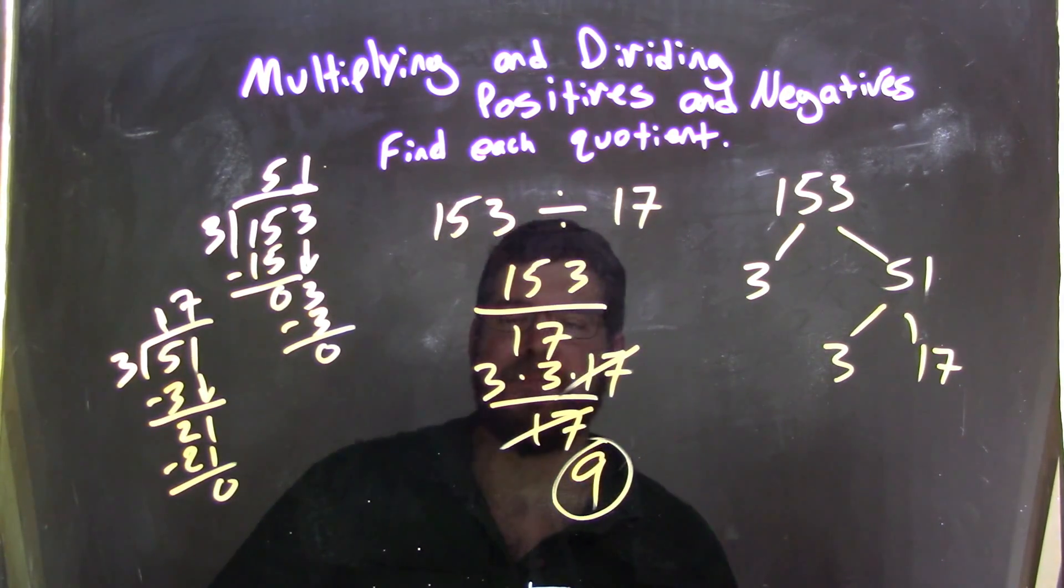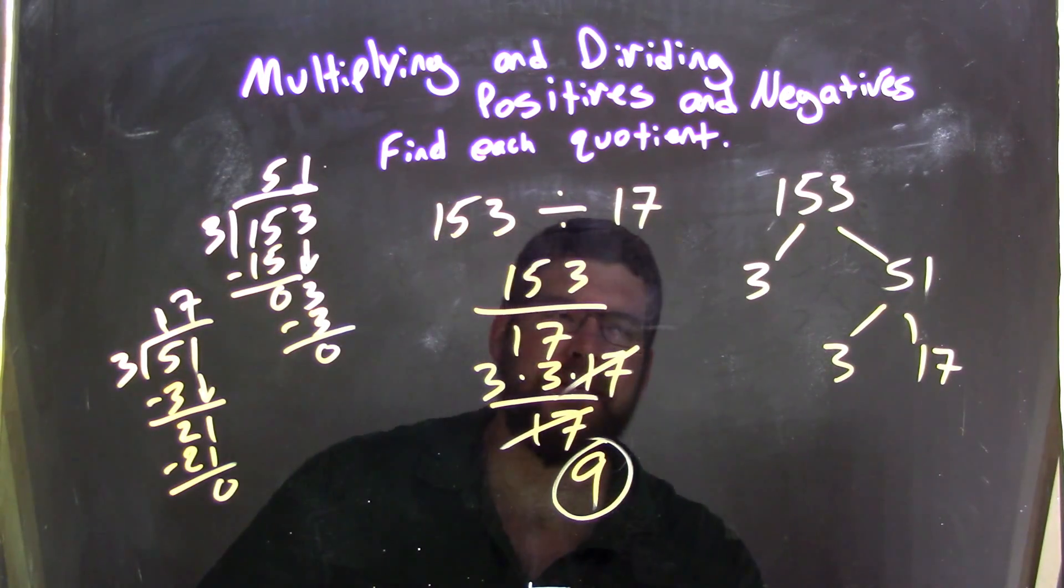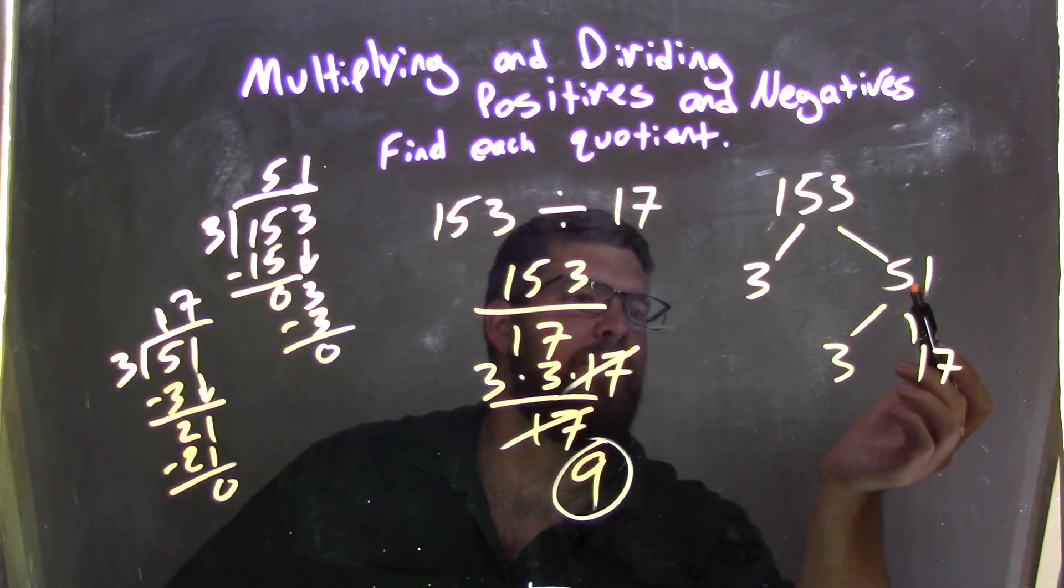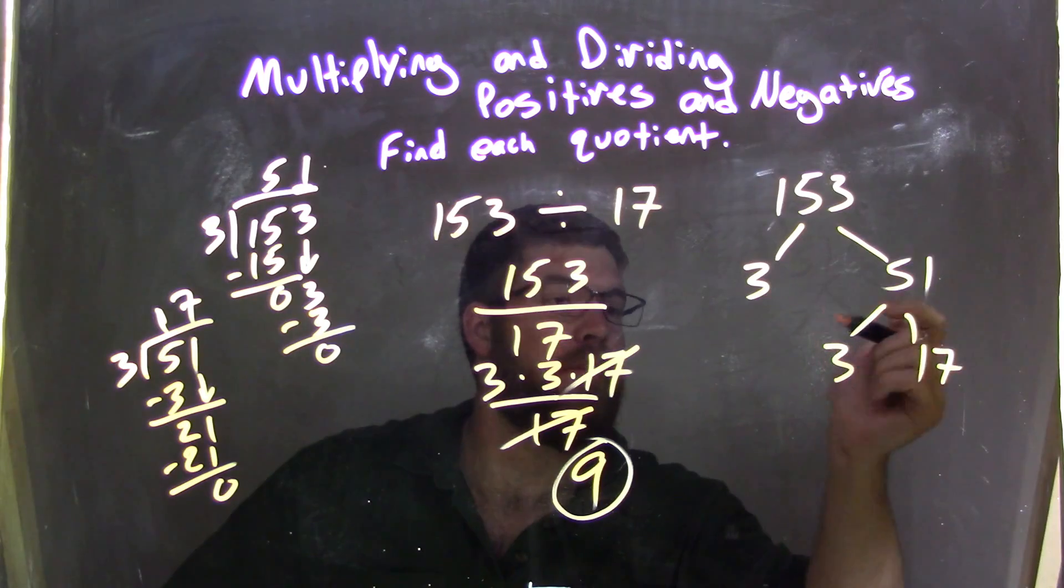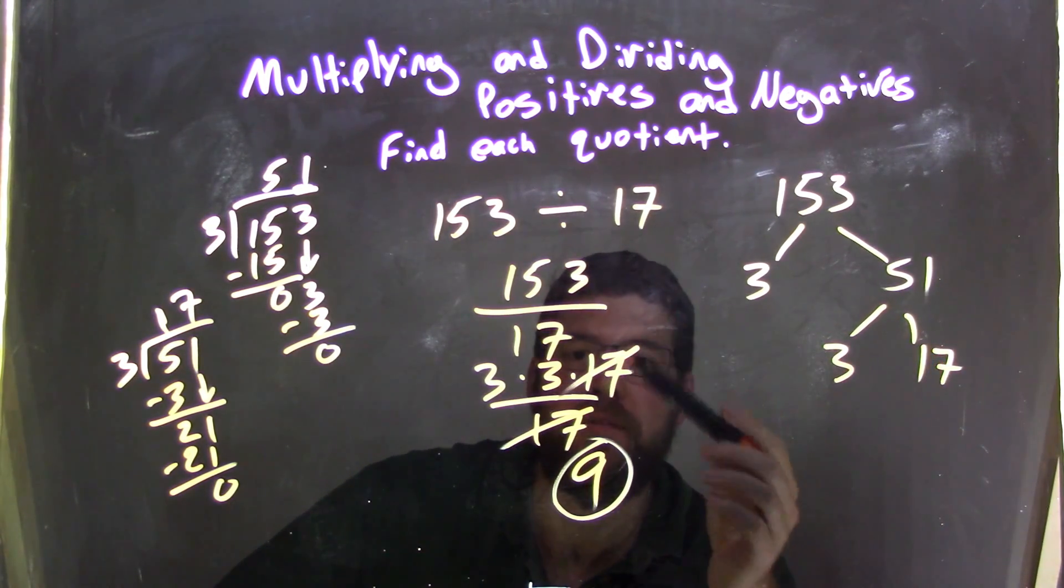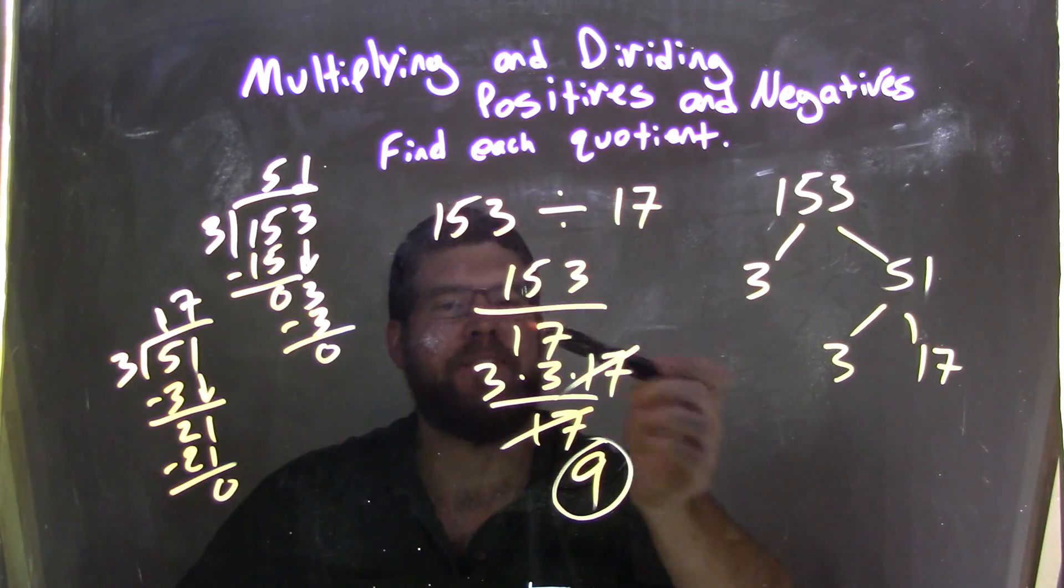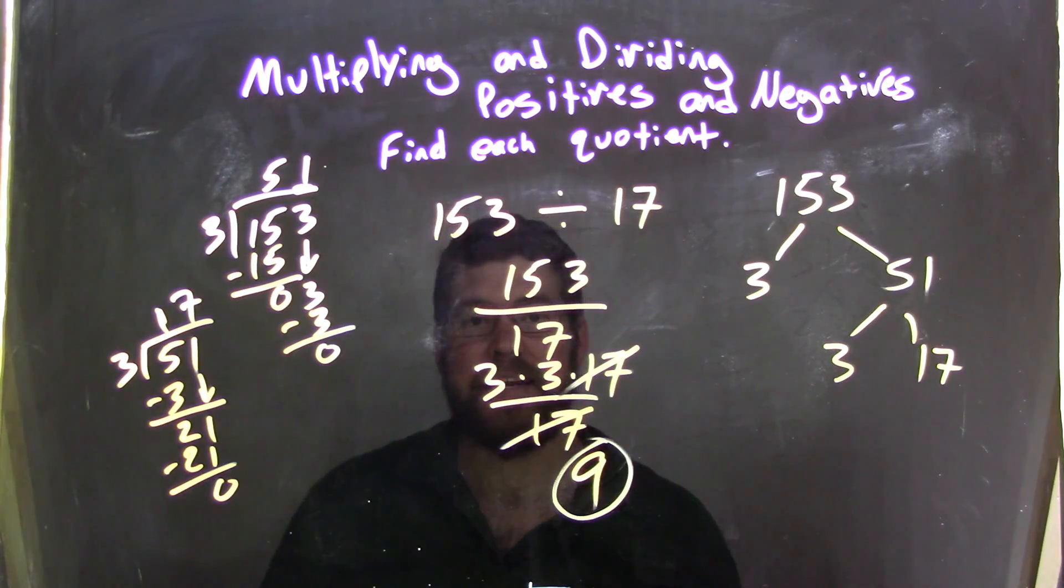So again, let's recap. We start with 153 divided by 17. 153, using long division, we could break down to be 3 and 51. 3 times 3 times 17, because 3 times 51 is 153. 51 is 3 times 17. So 3 times 3 times 17 is 153. I rewrote the 153 divided by 17 as a fraction. Cancel out the 17s. We're left with 3 times 3, which is just 9.